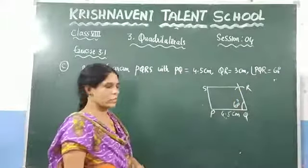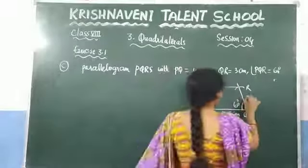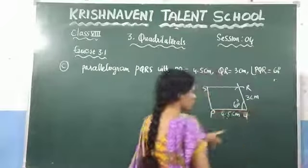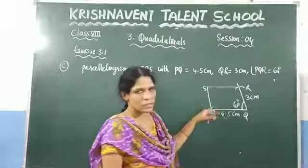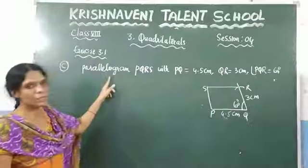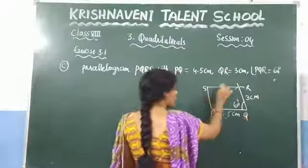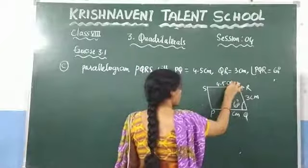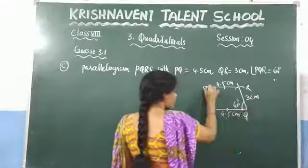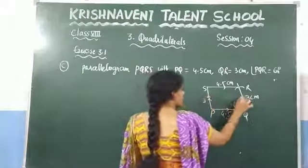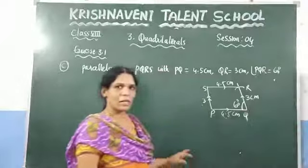Write the measurements we know: the length of PQ is 4.5 and the length of QR is 3 cm, and the angle Q is 60 degrees. Since the question states it is a parallelogram, in a parallelogram opposite sides are equal. So if this side is 4.5, the opposite side must also be 4.5. Similarly, if this length is 3, the opposite side must also be 3. So we know all 4 sides and 1 angle — now you can draw the parallelogram.